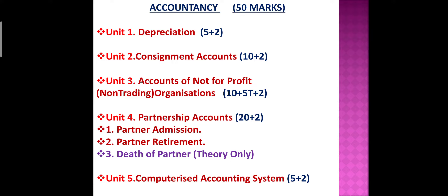Unit number 5 is Computerized Accounting System. It is only a theory part. A 5 marks question and a 2 marks question will come in the examination from this chapter. These are the 5 accountancy units for 50 marks.